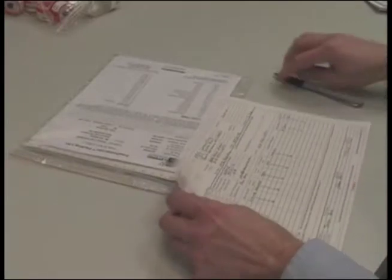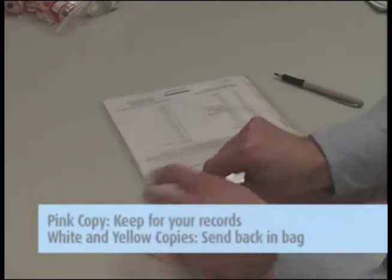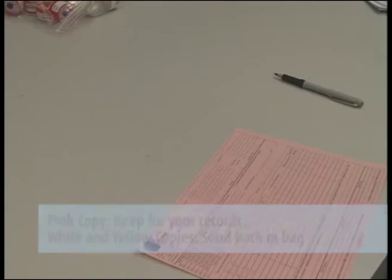Then complete the chain of custody form. It is important that you include all the information requested in order to ensure the turnaround time of your samples. Remove the pink copy and keep this for your records. Send the white and yellow copies in with the samples to the lab in the large Ziploc bag.